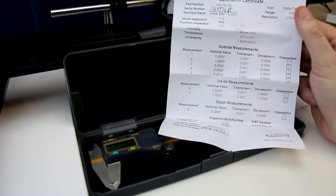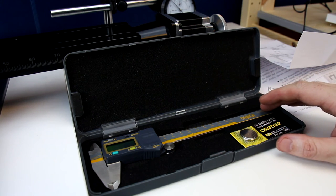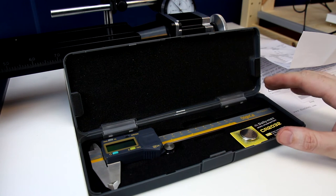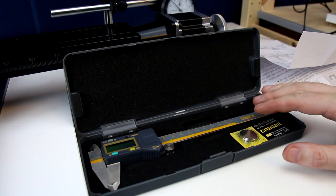To let you know, iGaging does actually make two different calipers. There's this unit which is their Origin Cal, which is their higher end unit, and they have some lower end units as well.